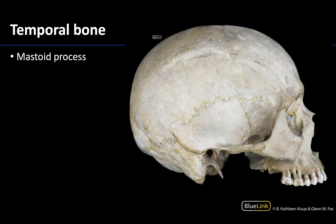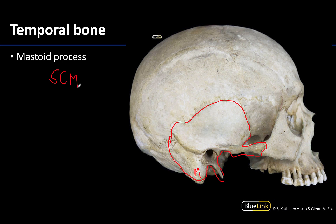Last but not least, we have the mastoid process. The mastoid process is going to be a part of the temporal bone, which you can see right here — it's a pretty complex bone with lots of processes extending in this region. What we're focusing on is this inferior projection of the temporal bone called the mastoid process. If you put your fingers underneath your ear, you are palpating this part of the bone. Importantly, the sternocleidomastoid muscle will have one of its superior attachments to the mastoid process.